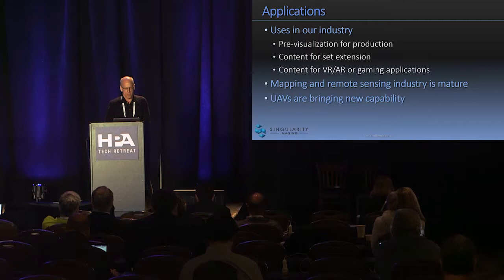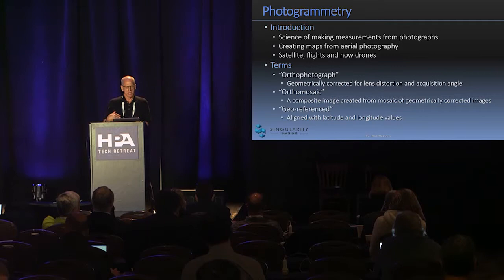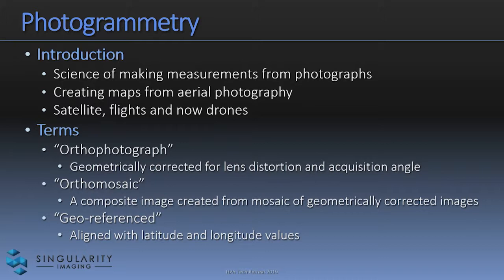First of all, mapping in the remote sensing industry is really quite mature, but UAVs are bringing new capability to this pre-existing art that we can start taking advantage of. Photogrammetry is the science of making measurements from photographs and we've been doing it as long as we've been doing aerial photography. It's basically the creation of maps from photographs.